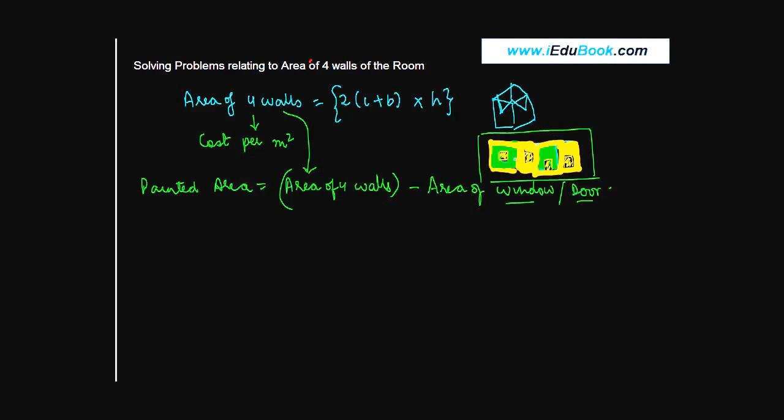They may be painted, they may not be painted, but the area to be painted excludes the area of these two things. So let's say, for example, you are told that the length is 8 meters, the breadth is 10 meters, and the height is 3 meters in a room.